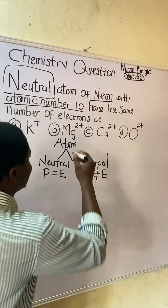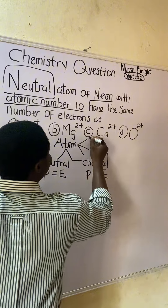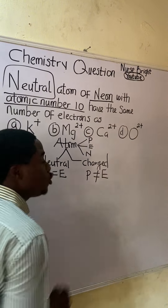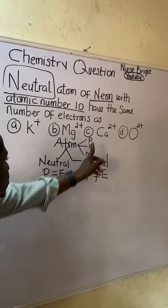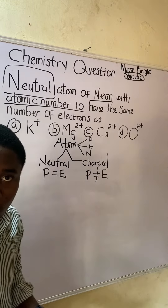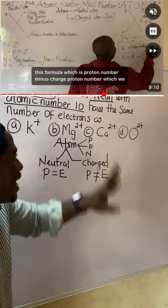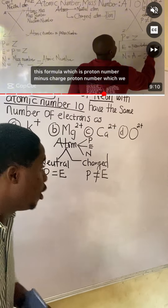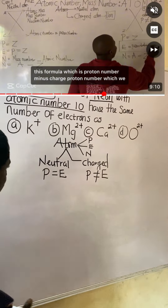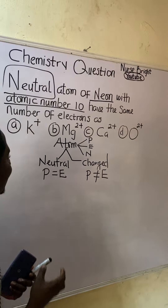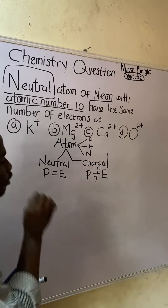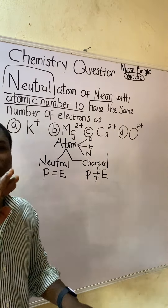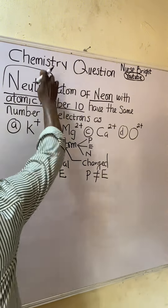An atom is made up of three important subatomic particles — protons, electrons, and neutrons. For now I'm focusing on just protons and electrons. For a neutral atom, proton number and electron number are the same, whereas for a charged atom they are not. They mention 'neutral atom of neon,' so our mind is focused on the neutral atom.